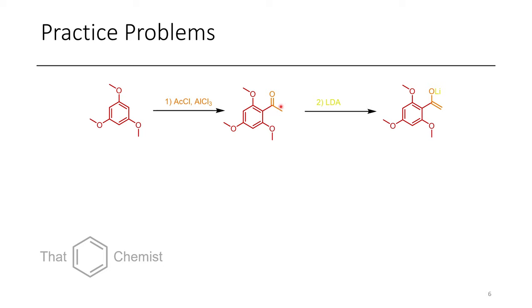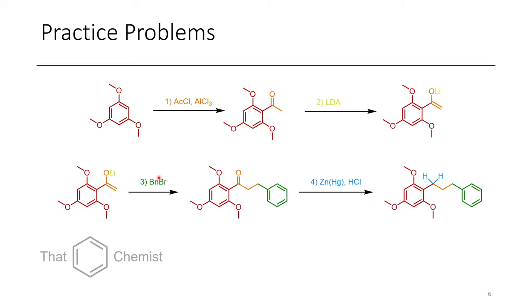We can then lithiate this ketone with LDA, giving us the lithium enolate, which can then be trapped by benzyl bromide, giving us this functionalized product. Finally, this benzylic ketone is able to be reduced using a Clemmensen reduction, giving us this final product here. So this would be the compound that you would draw for this question.